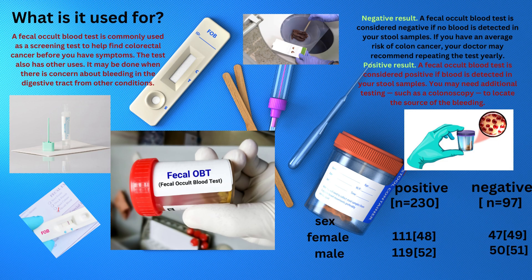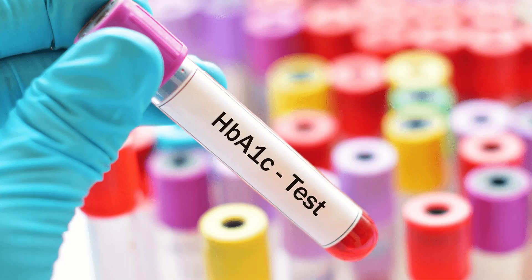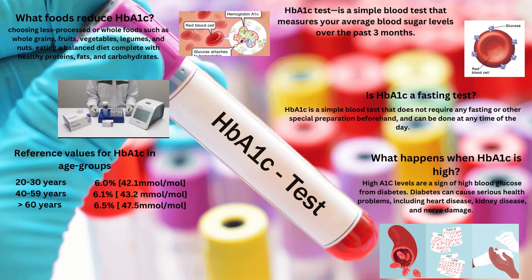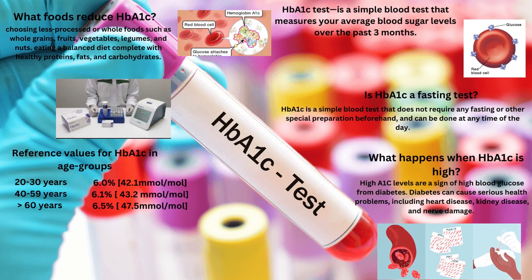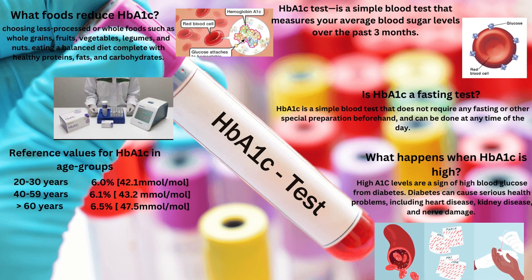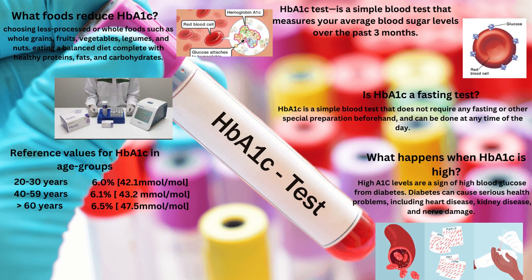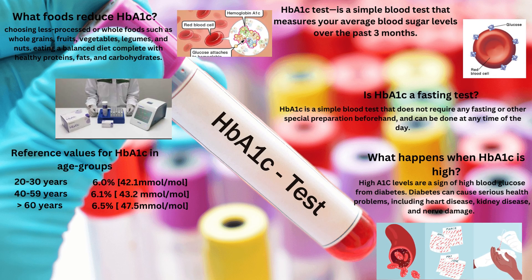HbA1c Test. The HbA1c test is a simple blood test that measures your average blood sugar levels over the past three months. What happens when HbA1c is high? High A1c levels are a sign of high blood glucose from diabetes. Diabetes can cause serious health problems including heart disease, kidney disease, and nerve damage.